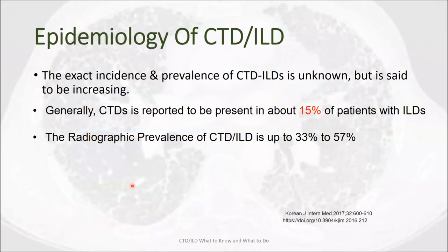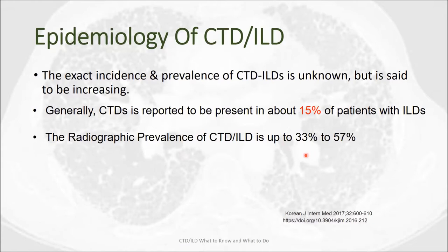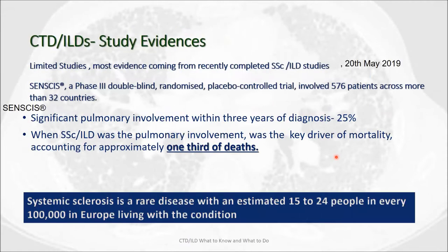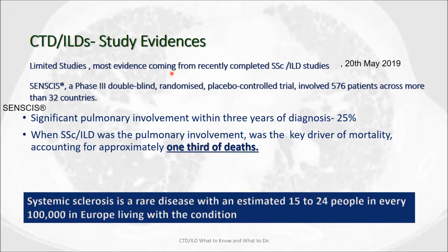When looking at the epidemiology behind connective tissue disease related ILD, the exact incidence and prevalence is unknown but is said to be increasing. Generally, connective tissue disease is reported to be present in about 15 percent of patients with ILD. However, radiological prevalence can vary according to classification criteria and availability of imaging, ranging from 33 to 57 percent, and it is variable across countries. Up until recently, the evidence for this field of medicine has been minimum or lacking.